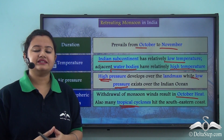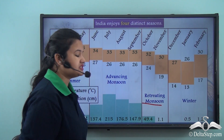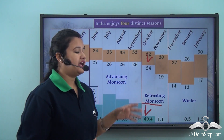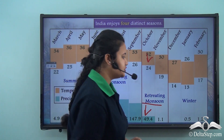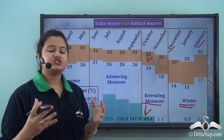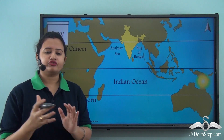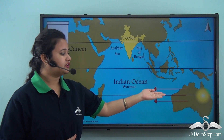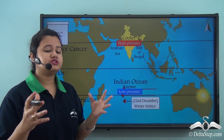Now let us move on to winter season. The retreating monsoon sees a drop in temperature and precipitation, gradually cooling and drying the climate, which gives way to winter season. Winter season prevails from December to February. With the onset of winter, the average temperature of India drops because the Sun migrates south and is vertical over the Tropic of Capricorn on 22nd December — also referred to as winter solstice.